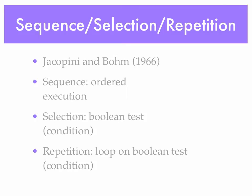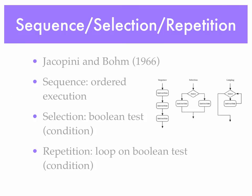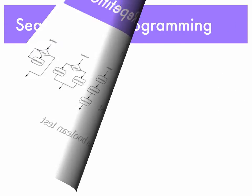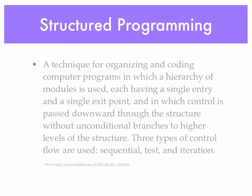If we look at these three graphically, we see sequence — one instruction after another. Selection — taking a different path based on the results of a test. And then looping — repeating something based on the results of a test, or exiting that loop based on the results of a test. Structured programming is an older paradigm. With structured programming, we had a hierarchy of modules, each with a single entry and a single exit point, and control passed downward through those modules one after another.